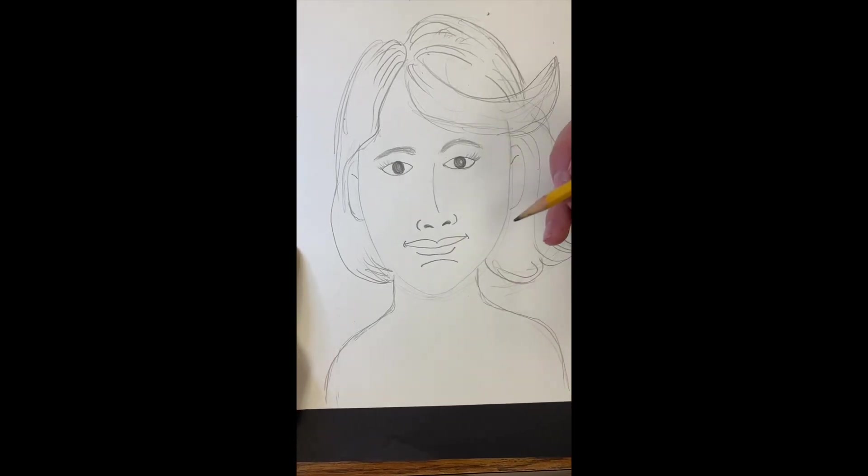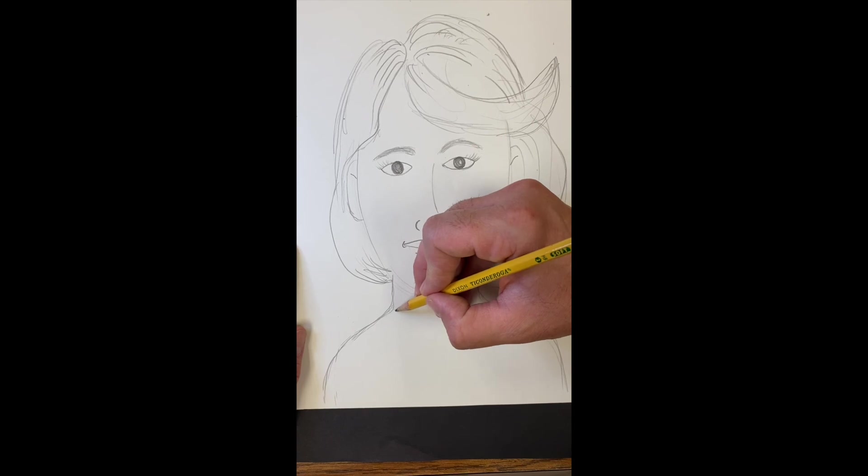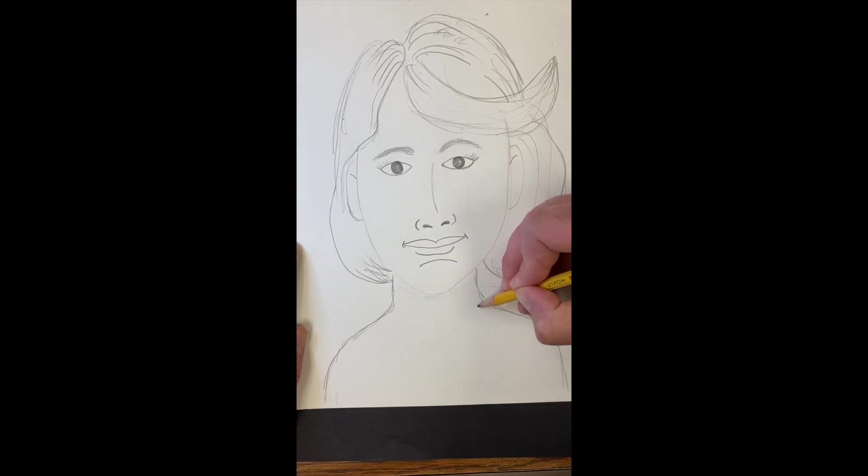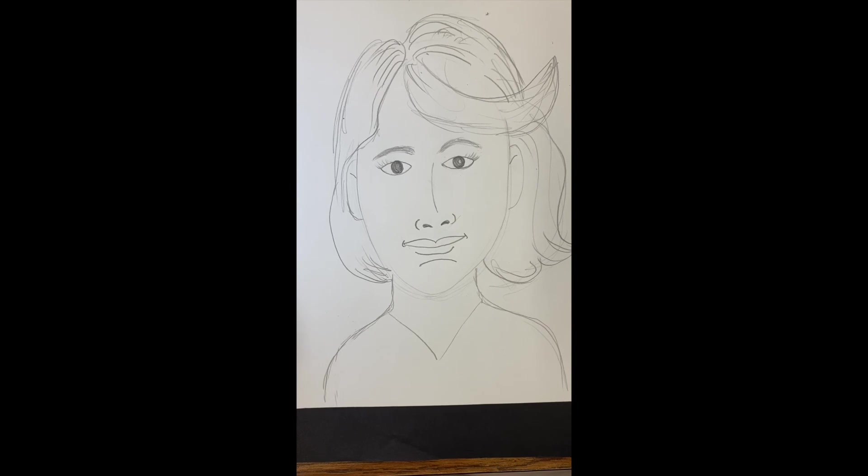And then we need some clothes. So look, we can keep this pretty simple. You could draw a V in right here or you could just draw a curvy line. I think I'll just draw a V in right there. And that's all we need for the clothing. And that is a fun basic way to draw a portrait. Hope you enjoyed it.